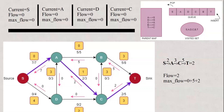We follow the same procedure to find the next augmenting path. BFS visits S, then A, then D, then C and B as neighbors of A, and T as a neighbor of C. The parent map is updated: A through S, D through S, C through A, B through C, D through C. Backtracking gives path S→A→C→T. Maximum flow through this path is 2, so flow = 2 and max flow = 0 + 5 + 2 = 7. We update the flow, residual capacity, and reverse residual capacity along this path. The updated graph D1 is shown after the second iteration.